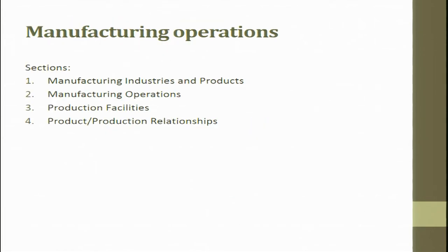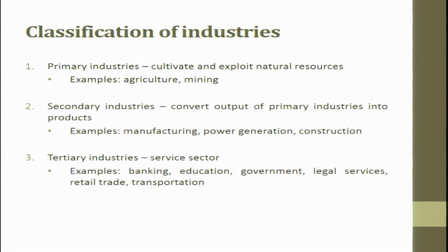In manufacturing operations, we will try to see manufacturing industries and products. We will look at manufacturing operations, production facilities, and product and production relationships. These are the parts of manufacturing operations.